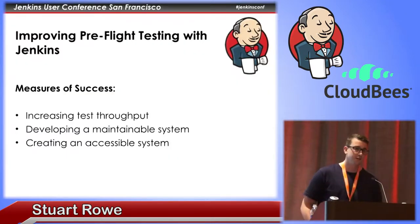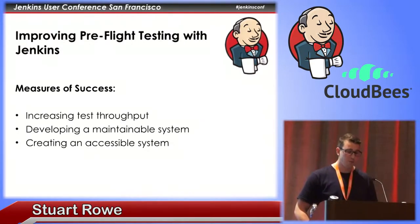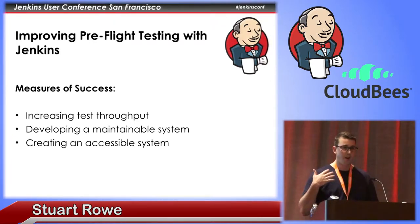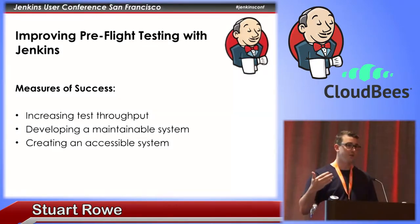My talk is going to focus on how we improved our existing pre-flight testing system by moving to Jenkins. When I talk about improving, we're focused on increasing our test throughput, creating a system that we can maintain so we can use it in future development cycles, as well as creating a system that our engineers actually wanted to use — one they found intuitive and could adopt into their daily workflow.